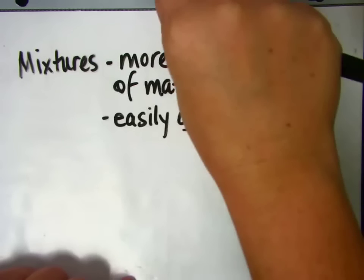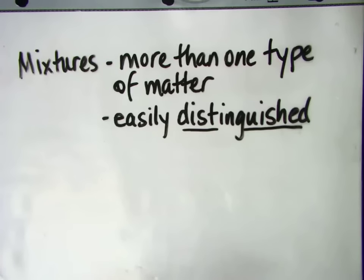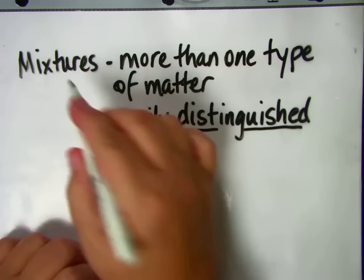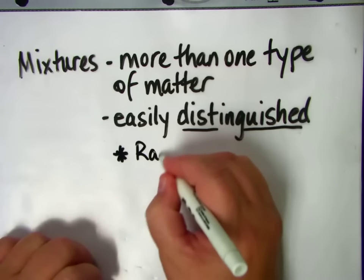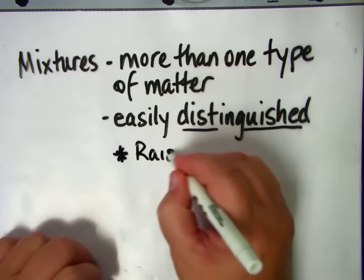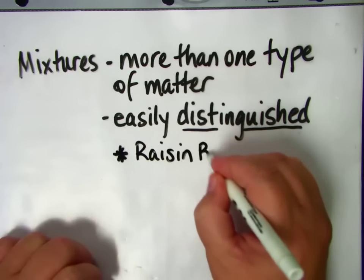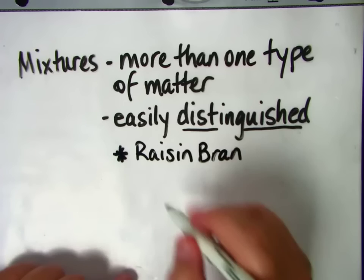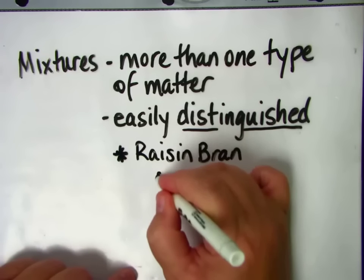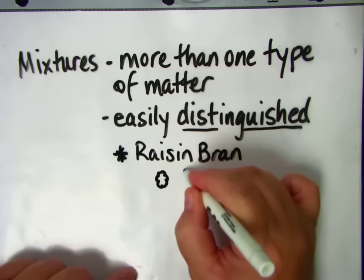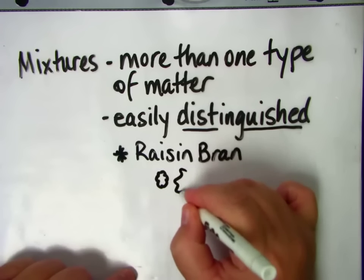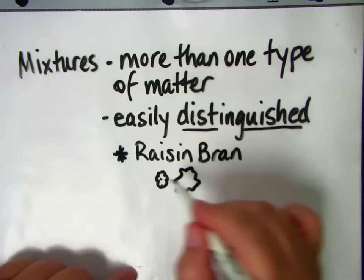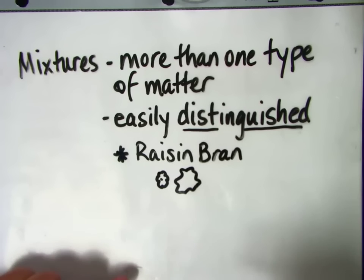If you think about raisin bran cereal, that will help you remember mixtures. Raisin bran is a mixture because it has raisin matter in it, and it also has the flake matter, and it's easy to tell the raisins from the flakes.